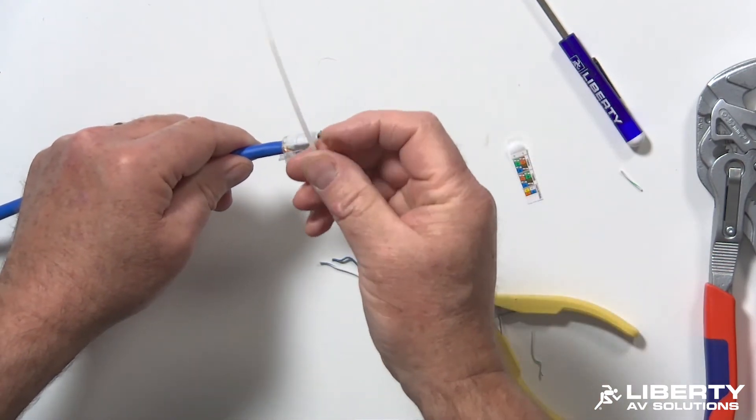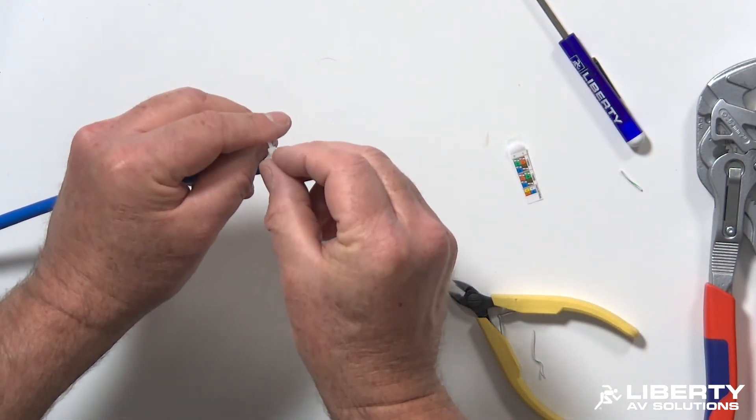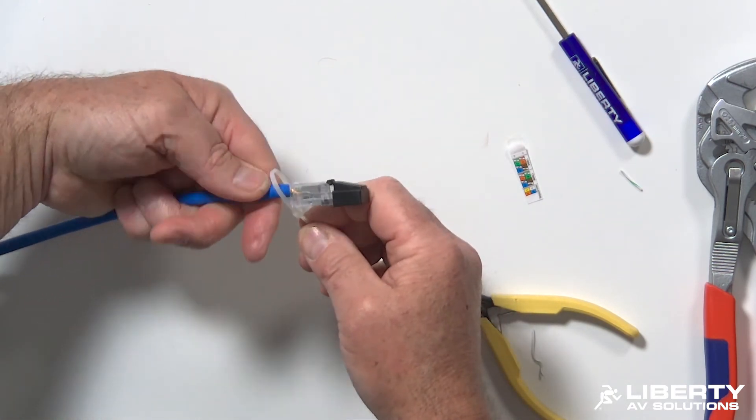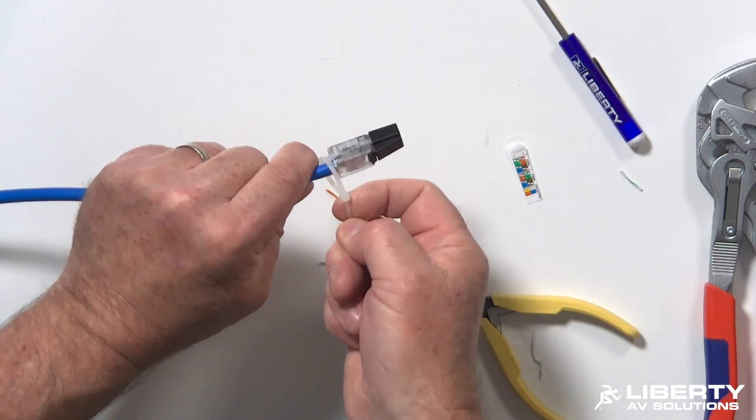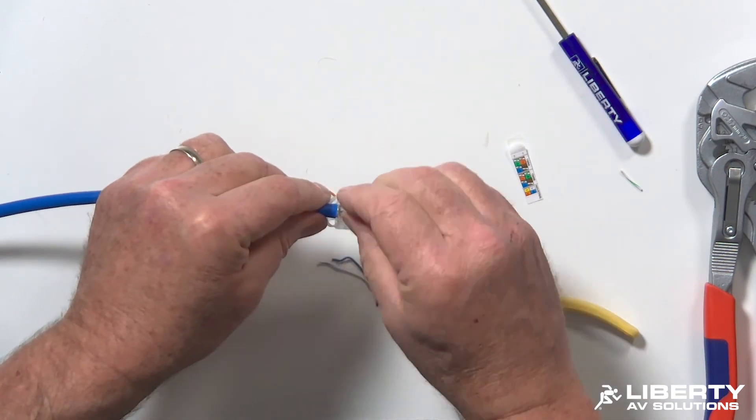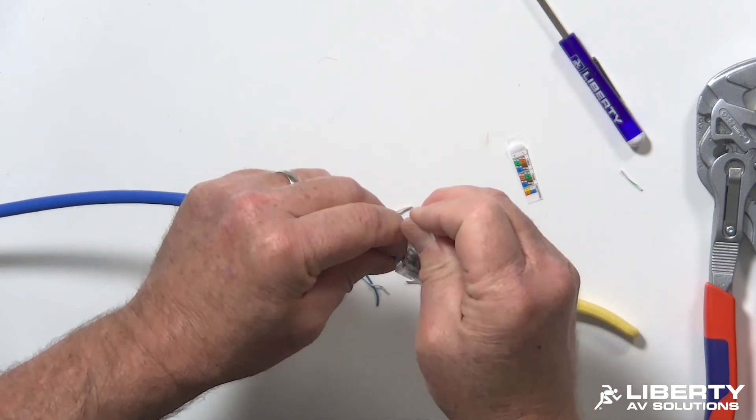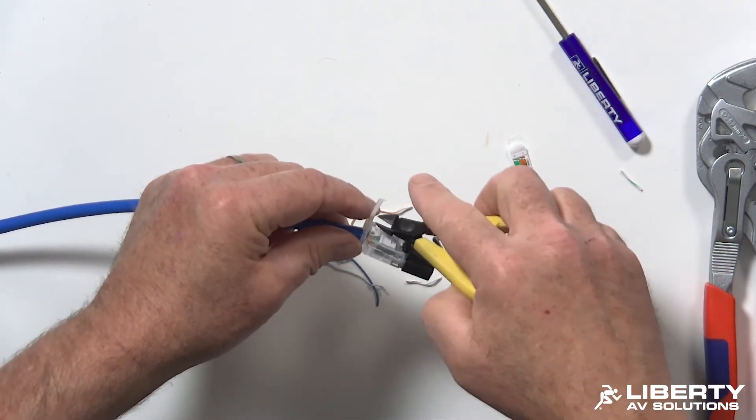Now the strain relief on this connector is basically a zip tie. I'll go ahead and put this on here. You can do this a couple ways. You can do it with a zip tie gun. If you do, use a light setting so you don't stress the cable. Or you can do it by hand. Just go ahead and zip that, tie that down, strain relief it. Trim off the excess.